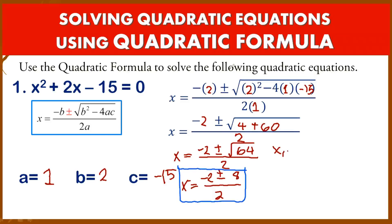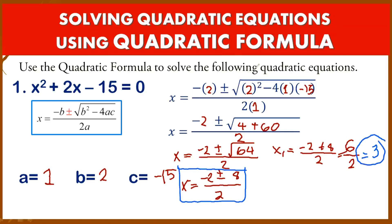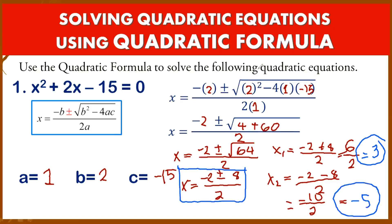To get x₁, use the positive 8: x₁ = (−2 + 8) / 2 = 6 / 2 = 3. So x₁ = 3. For x₂, use negative 8: x₂ = (−2 − 8) / 2 = −10 / 2 = −5. So you have two values: x₁ = 3 and x₂ = −5.